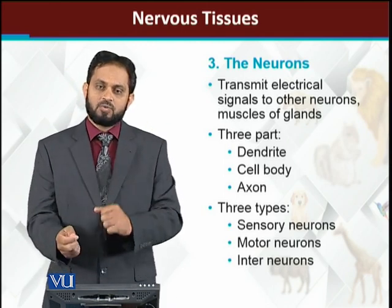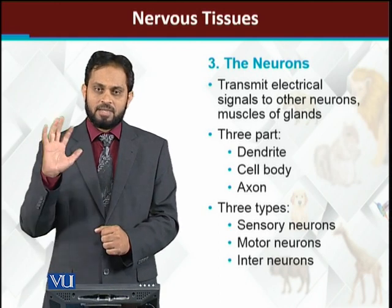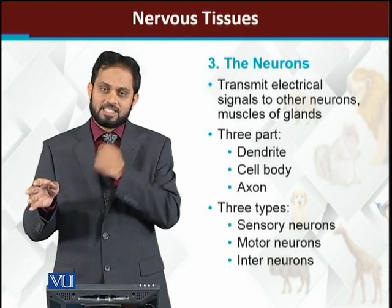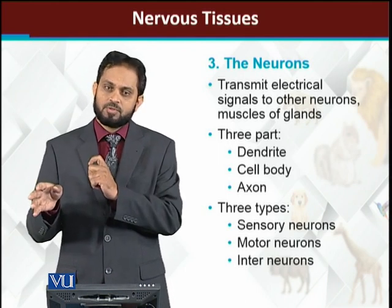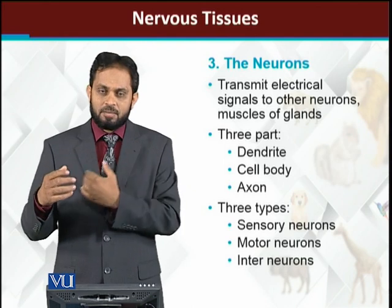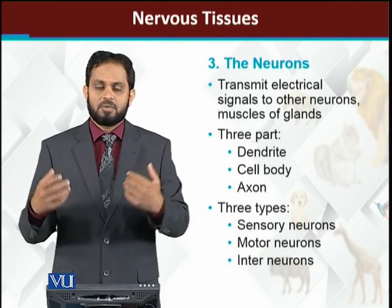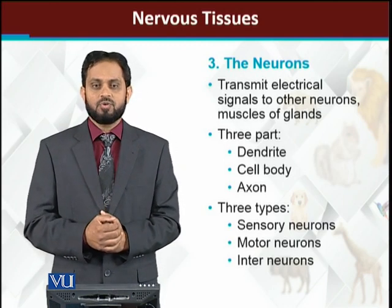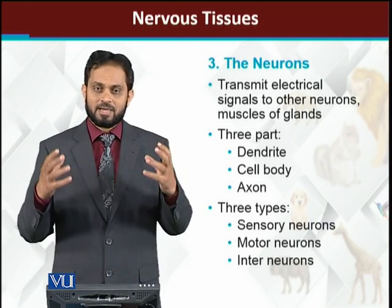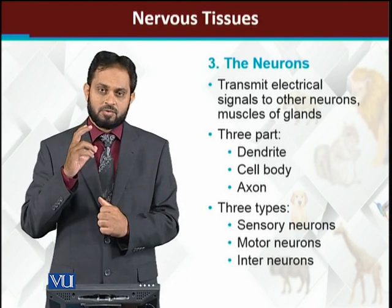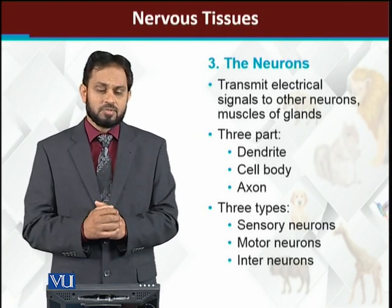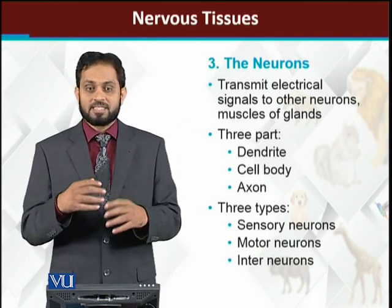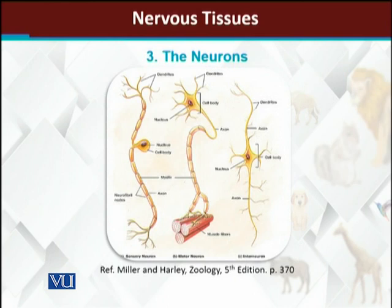Motor neurons carry the brain's orders back to different parts of the body. For example, if I am moving my hand, the message travels from the brain to the hand — this happens due to motor neurons. Motor neurons carry messages to our legs, our hands, and other body parts from the central nervous system. Interneurons are those that form our central nervous system — they are found in the brain and spinal cord — and their basic job is to process information, make decisions based on received information, and process it.